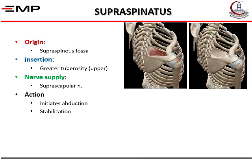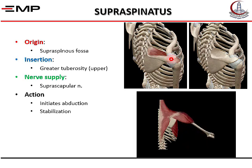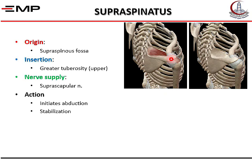The next muscle is supraspinatus. It takes origin from the supraspinous fossa and passes under the coracoacromial arch, separated from the coracoacromial ligament by the subacromial bursa, then inserts into the upper impression of the greater tuberosity of the humerus. Its nerve supply is the suprascapular nerve. It initiates abduction of the shoulder and is one of the rotator cuff muscles that stabilizes the head of the humerus in the glenoid cavity.